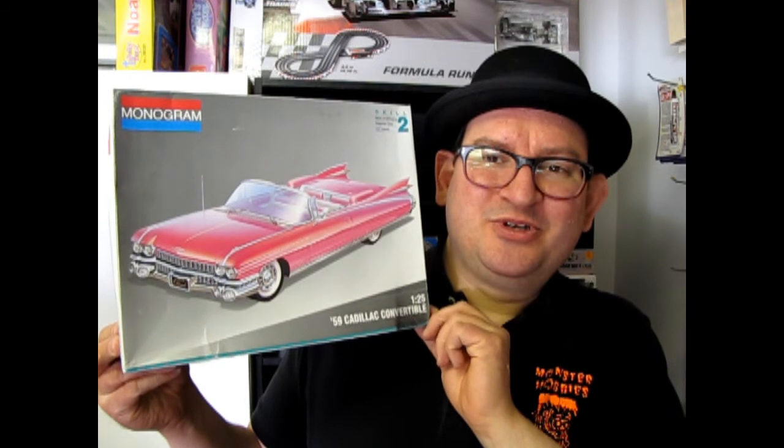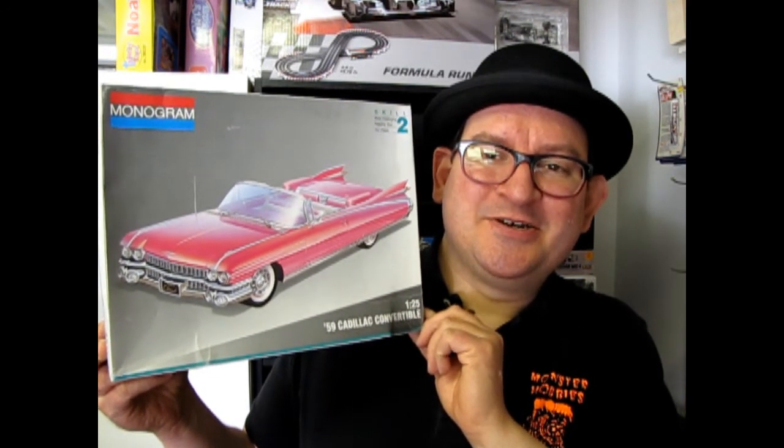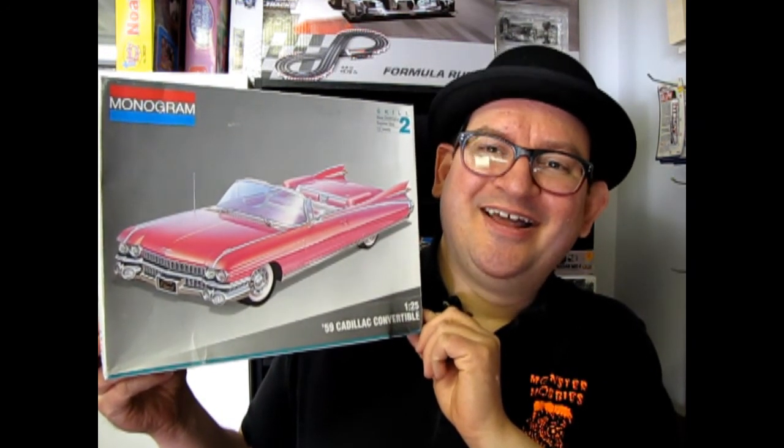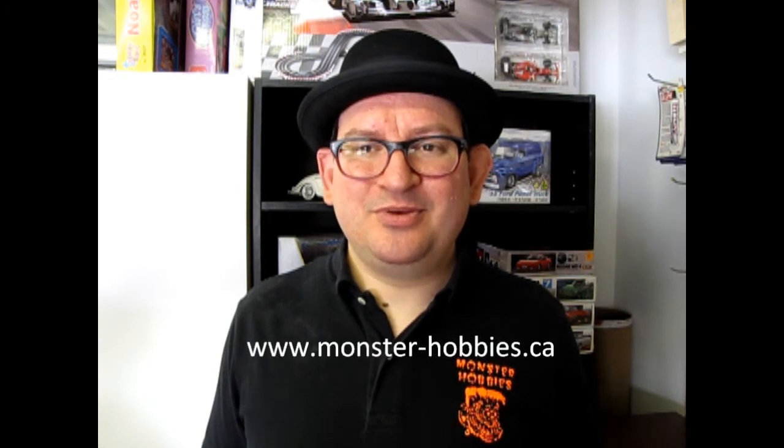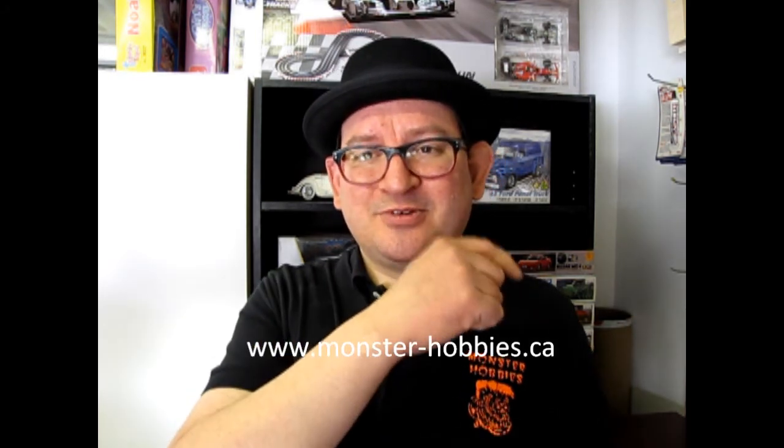Well, we hope you enjoyed that elegant, excessive chrome monster on Monster Hobbies, What's in the Box? I'm talking about the 59 Caddy, of course. And if you would like to see what other cars are available at our web store, please visit us at www.monster-hobbies.ca. We ship worldwide. And if you enjoy these videos and want to see more, like and subscribe and click the notification bell right here, and check out these three other amazing videos. And until next time, keep it sparklin'!